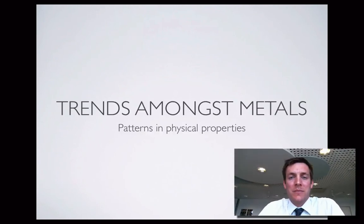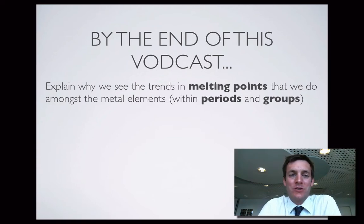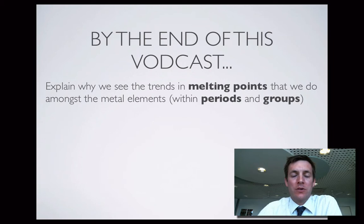Hi there, this is the second of the Year 12 films about metals and it tries to describe or explain why the trends that we observe as we move around the periodic table looking at the metals — why they are the way they are. And hopefully by the end of this film you'll be able to explain why the melting points change in the way that they do, first moving across periods and secondly moving across groups.